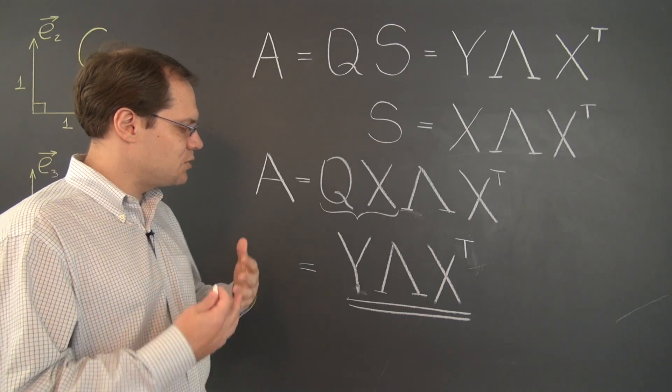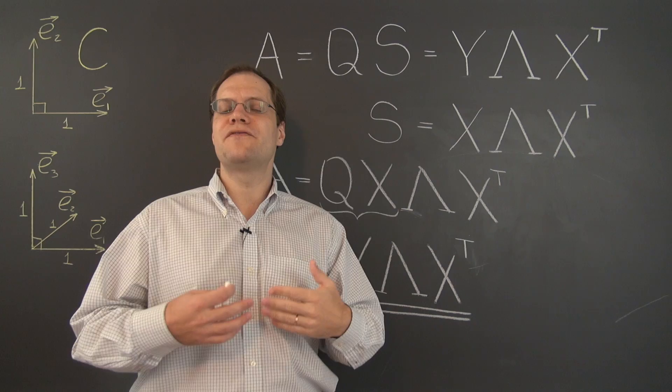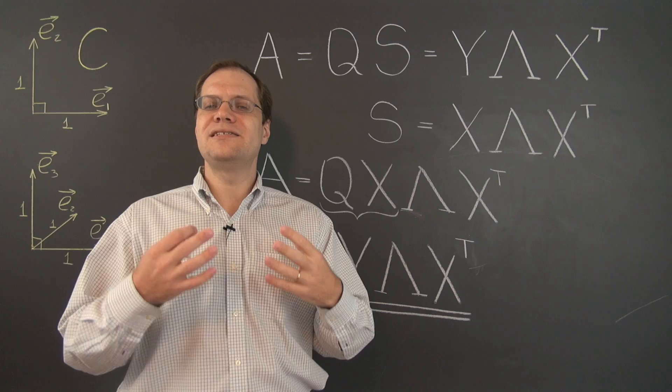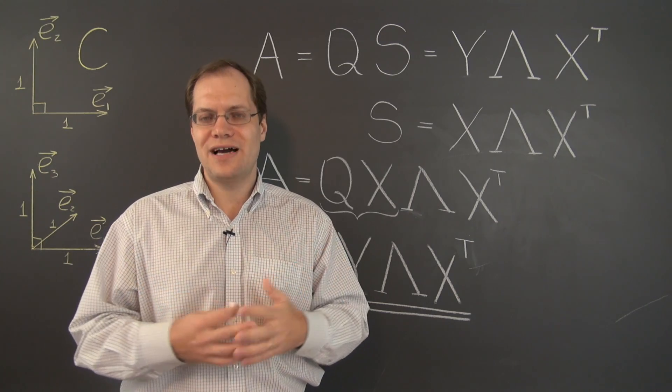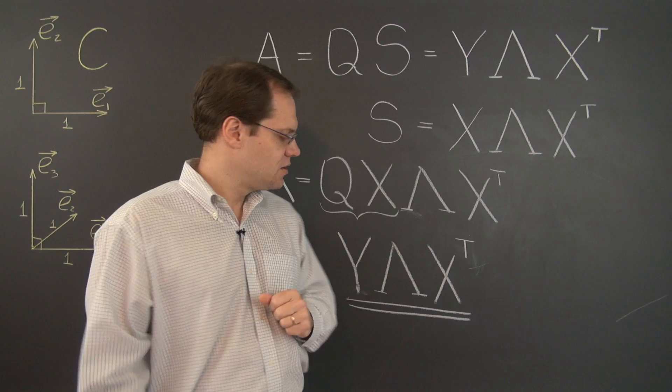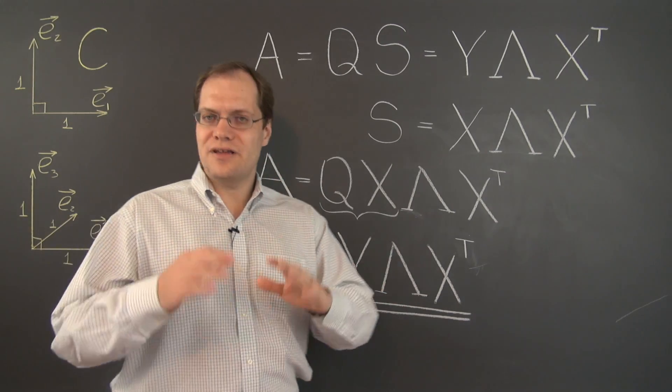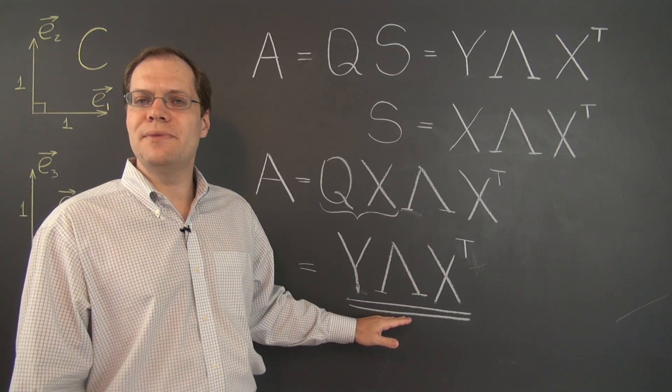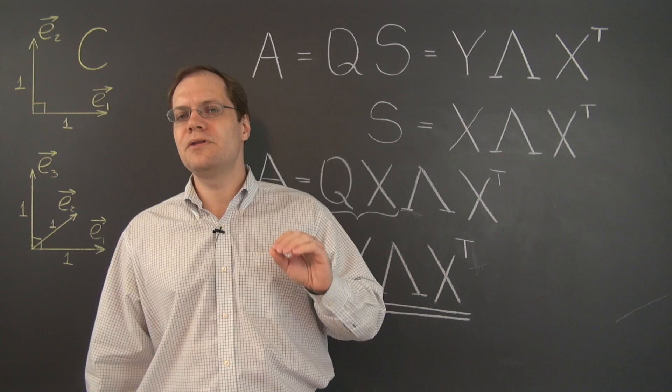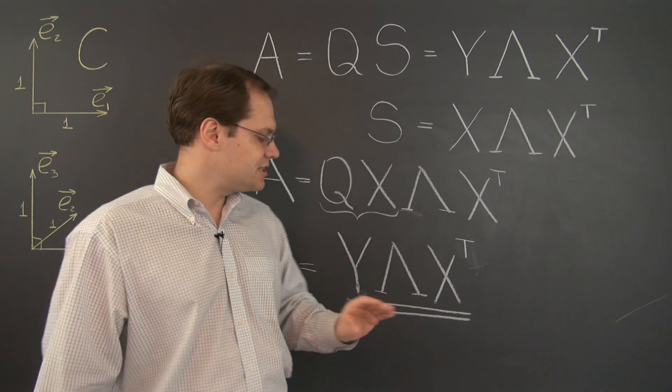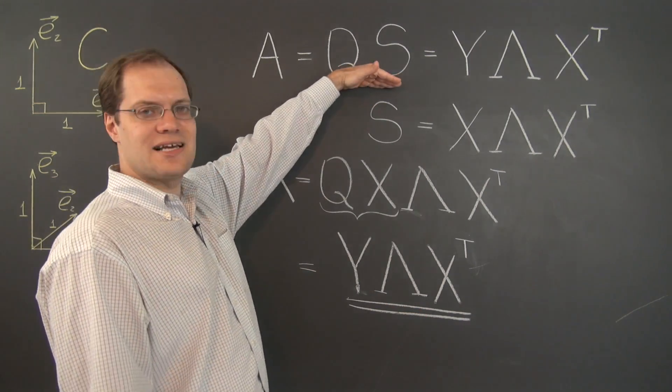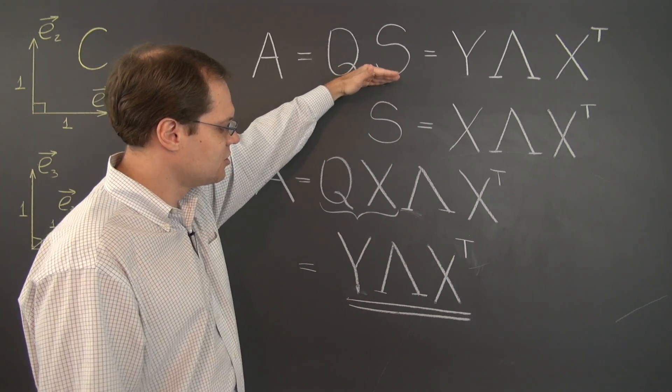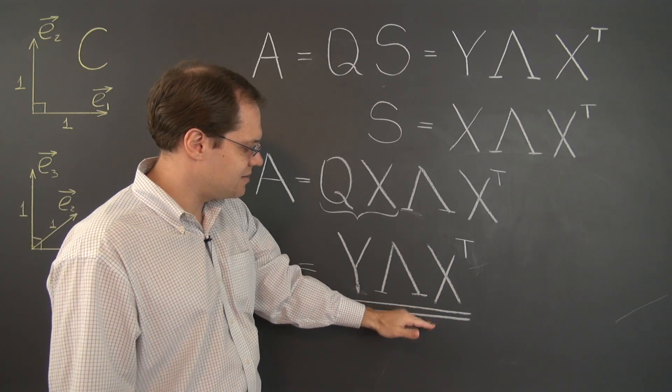So the first property that we can point out is the universality, whereas the eigenvalue decomposition only exists for matrices with a full set of eigenvalues and no defects and no complex eigenvalues. This decomposition exists for all square matrices whatsoever, so it is remarkably universal. And of course it inherits its universality from this decomposition. So whatever we said before about the universality of this decomposition, we can once again say about this decomposition.